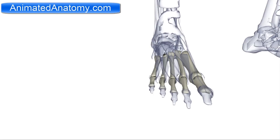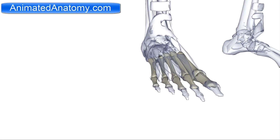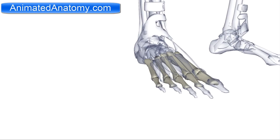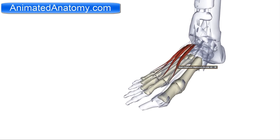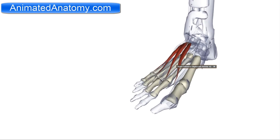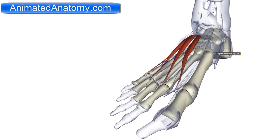In this lesson I will talk about the muscles of the foot. Here we have the extensor digitorum brevis. The extensor digitorum brevis is the group of muscles that starts from the calcaneus bone and it goes all the way here, inserting on the lateral four fingers.